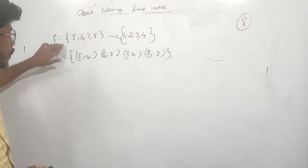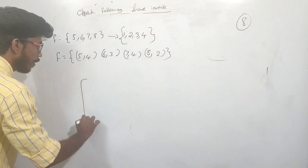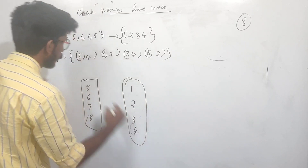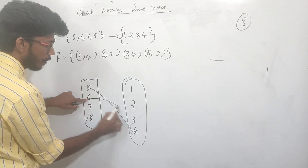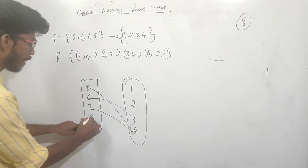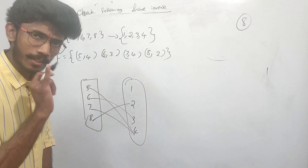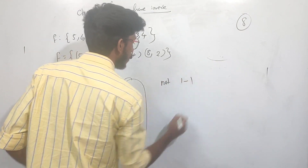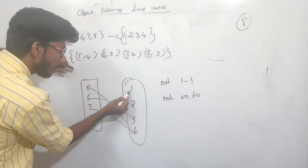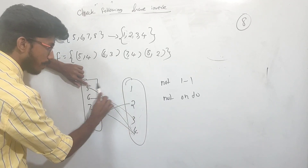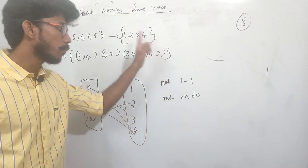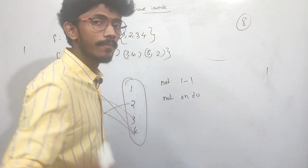How many elements are there? For example, 5, 6, 7, 8 mapping to 1, 2, 3, 4: if 7 maps to 4 and 5 maps to 4, then it is not one-one because two elements share the same image. It is not invertible. But if every element has a unique image and it is one-to-one, then the inverse exists.